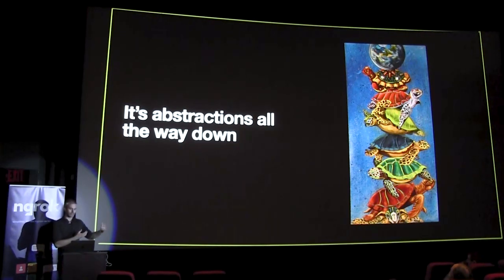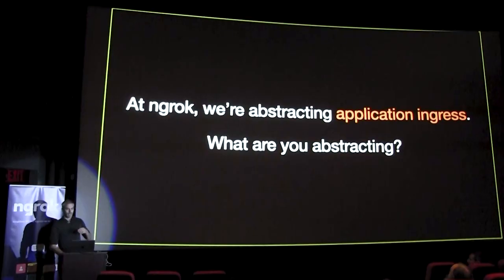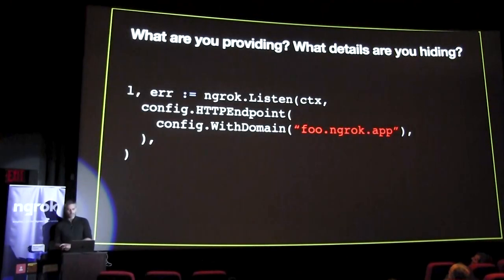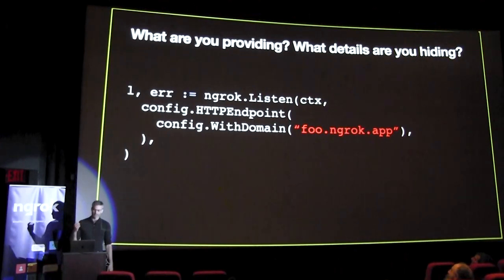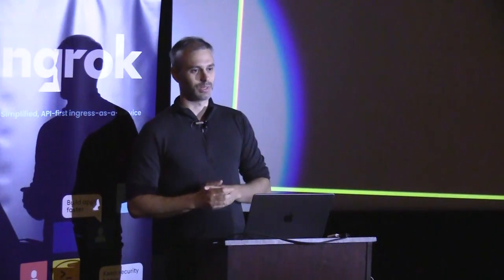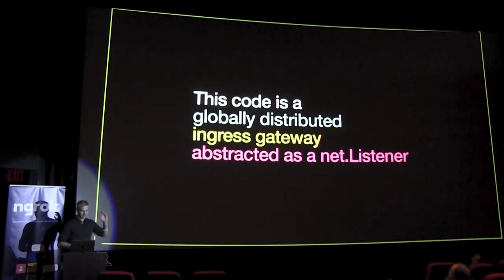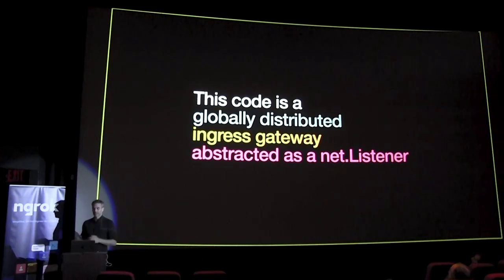Those well-known examples exist, but inside your own software you are always doing the same things. At Ngrok, we're abstracting application ingress, but what I'd challenge you to think about in the software that you're writing is: what are you abstracting? If we go back to the definition — what are you providing, and what details are you hiding — if you know the answers to those questions, you've done a lot of the work of figuring out what abstraction to provide. So much flows from that clarity. For Ngrok, that code is a globally distributed ingress gateway abstracted as a net.Listener, and finding that clarity really helps in deciding exactly what to build.